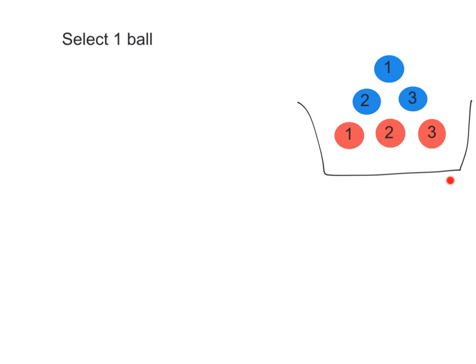Let's look at another example. We have a container with balls, and the balls have two characteristics: the color, which could be red or blue, and the number written on the ball, which could be one, two, or three. When you select one ball, the first thing you can think of is the color — blue or red.